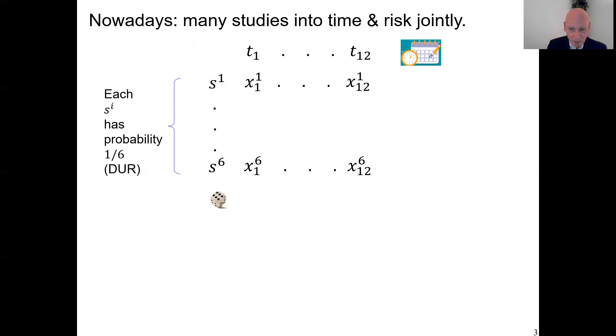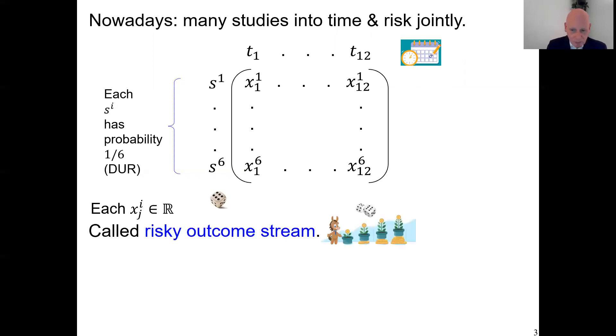This matrix describes what is happening. You can say here, for every side of the die, there is an outcome stream coming to you. You can also say every time point you face a lottery. For simplicity, every entry in the matrix is going to be a real number, let's say money amount. We have a matrix here, we call such a matrix a risky outcome stream. We do decision theory, that means we have to choose between different risky outcome streams. We use a binary preference relation over the outcome streams to capture it. And the domain will be R to the power 6 times 12, of course.